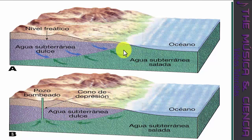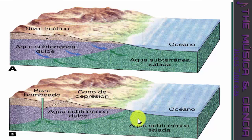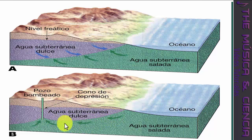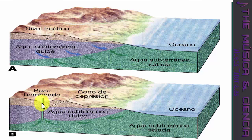En la parte B del gráfico tenemos el mismo esquema pero con un bombeo por parte de un pozo construido en el acuífero. A medida que vamos extrayendo agua dulce del acuífero, y esa extracción está cercana a la línea de interfase, se comienza a formar un cono de depresión de agua salada que va agotando la reserva y mezclando el agua dulce con el agua salada. Cuando los pozos son sobreexplotados comienza a salir agua salada del acuífero.